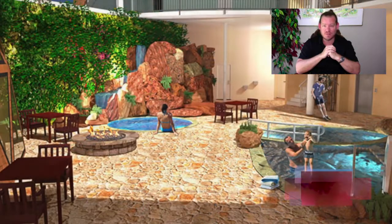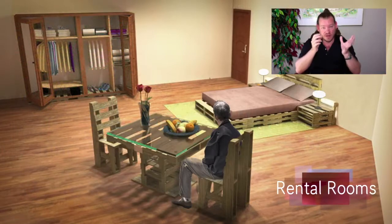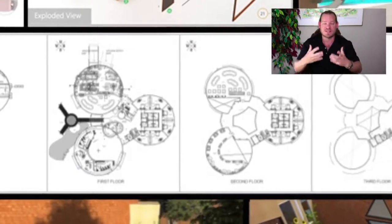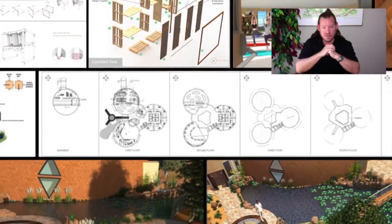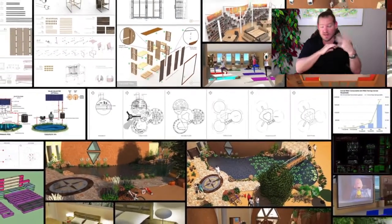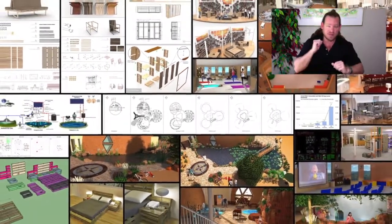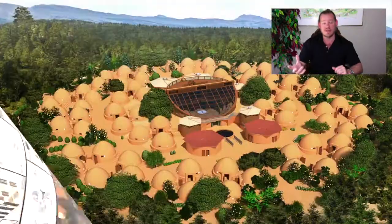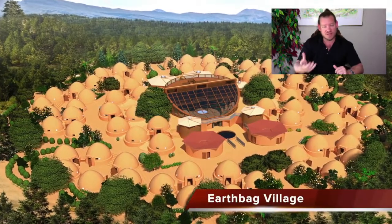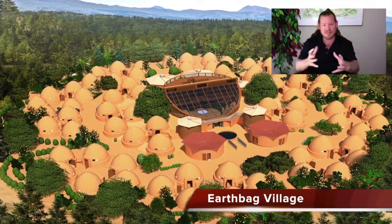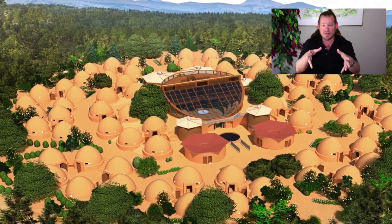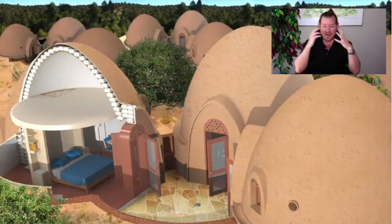Everything you see happening in the background of the video here are the sustainable village models that we're creating, but there's so much more than just that. Our idea of sustainable community models also includes an evolution of sustainability that takes the physical foundations — food, energy, and housing — and combines them with the emotional foundations: highest good education models, highest good economic models, fulfilled living models, and true earth stewardship, all built into the sustainable community models you see in the background.